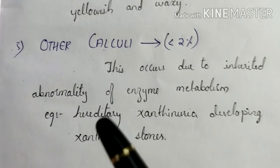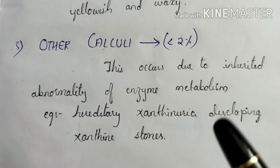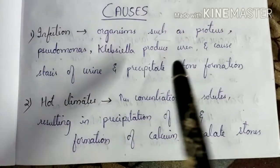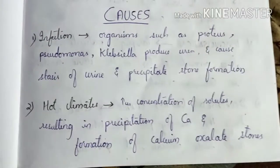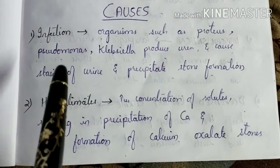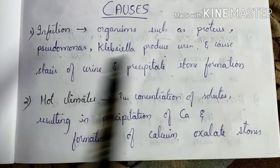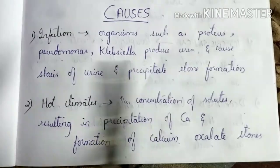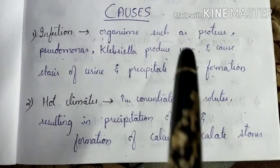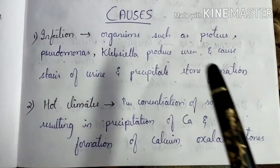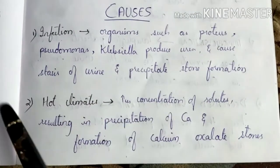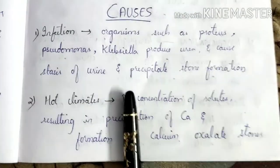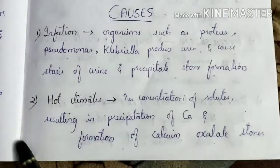For example, hereditary xanthinuria leads to xanthine stones. Coming to the causes: infection with organisms such as Proteus, Pseudomonas, and Klebsiella produces urease, causing stasis of urine, which precipitates stone formation.